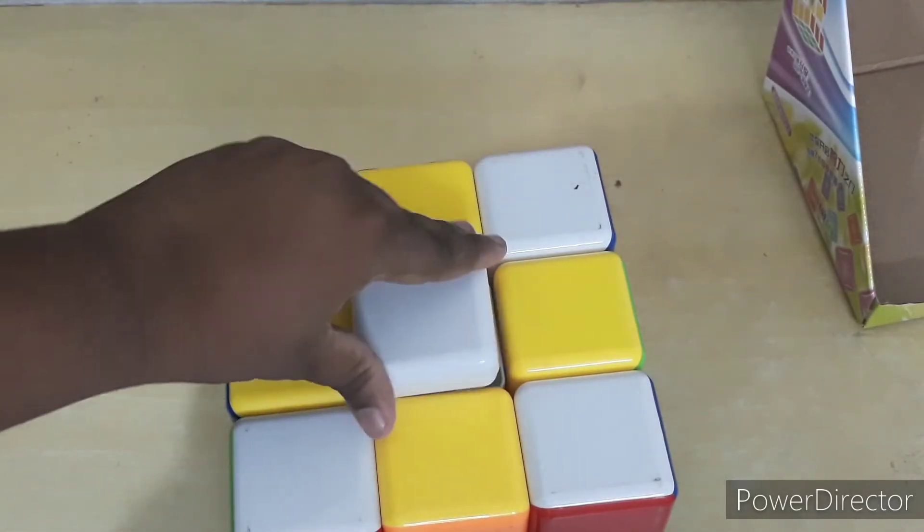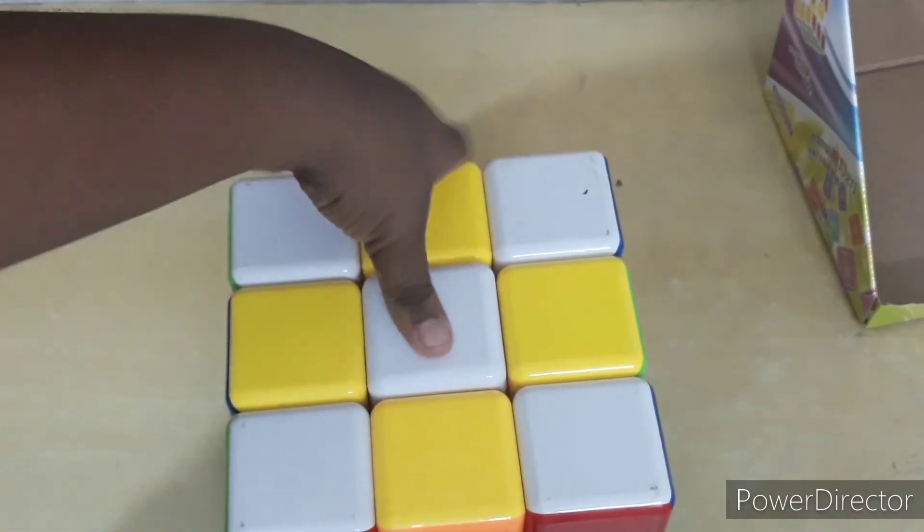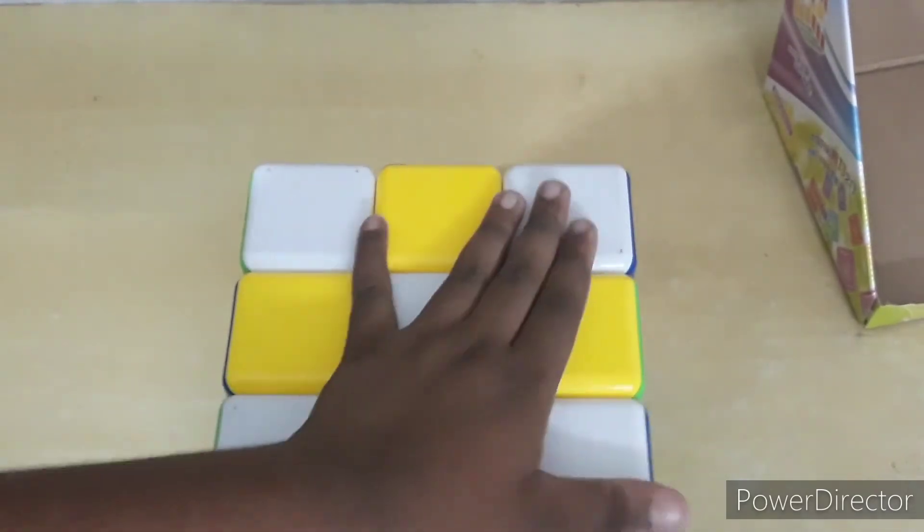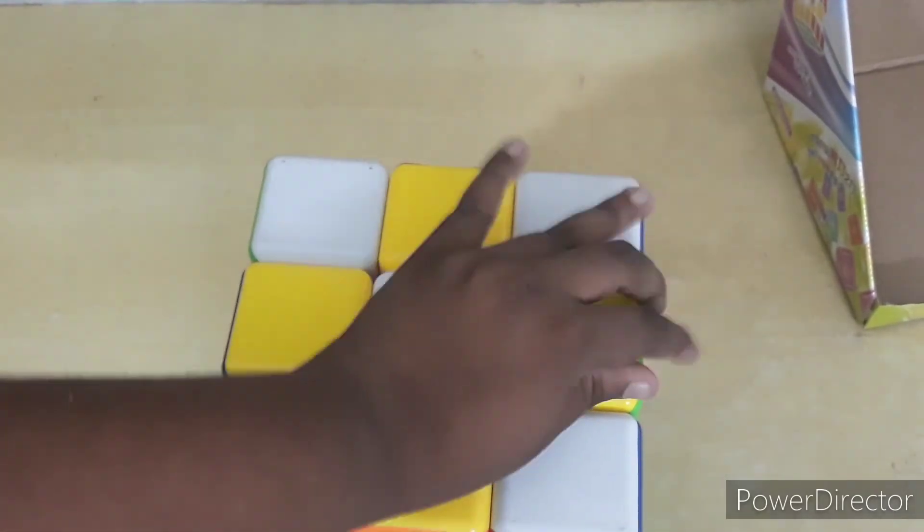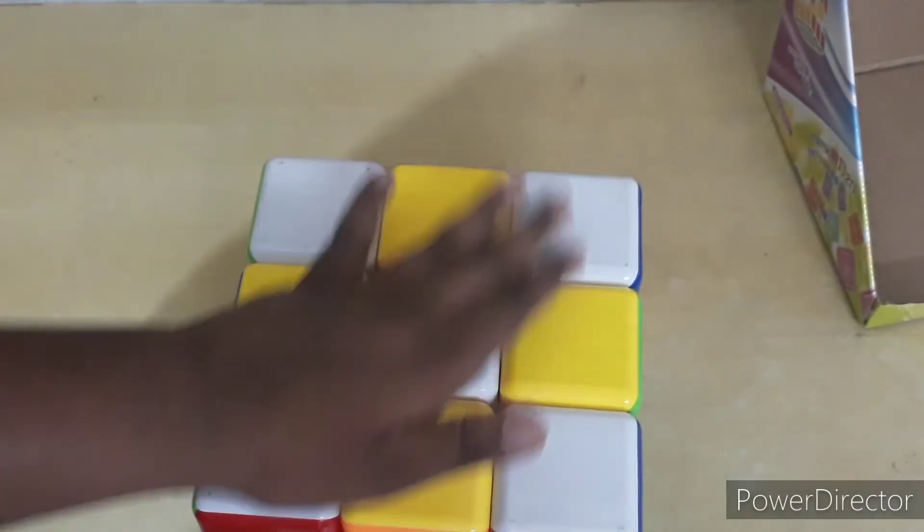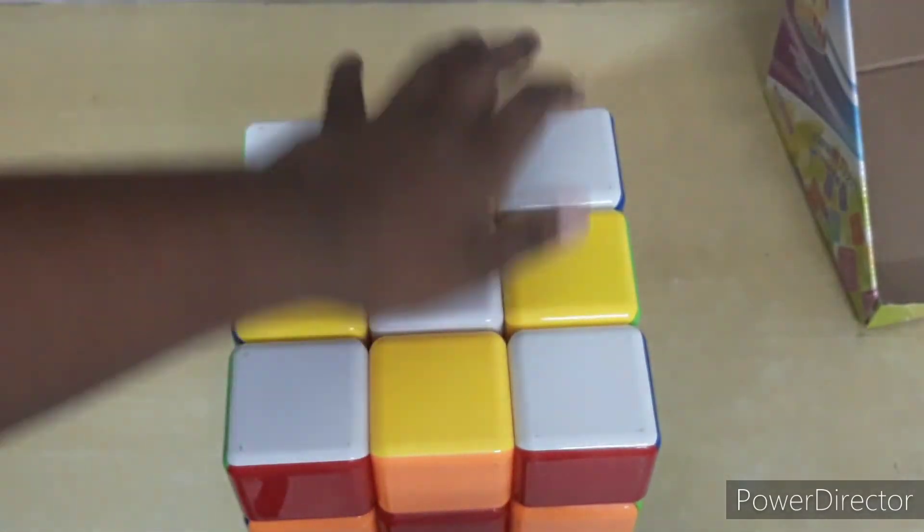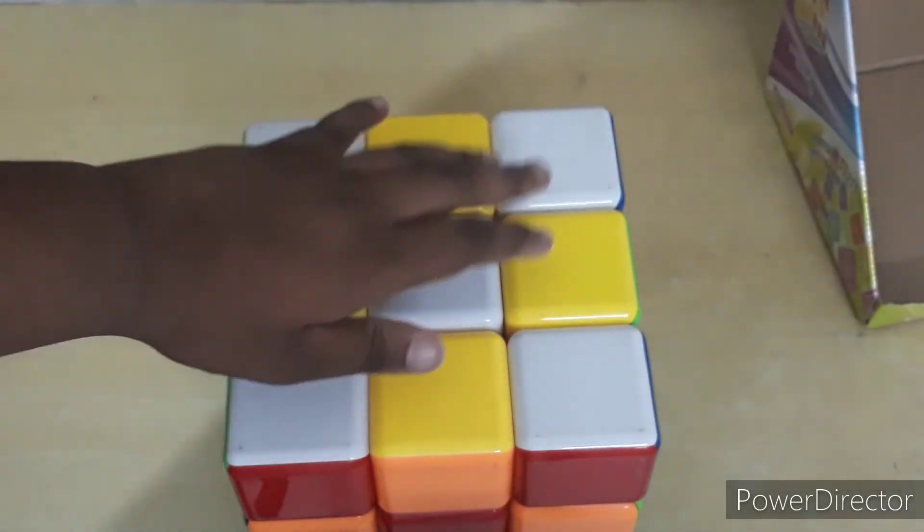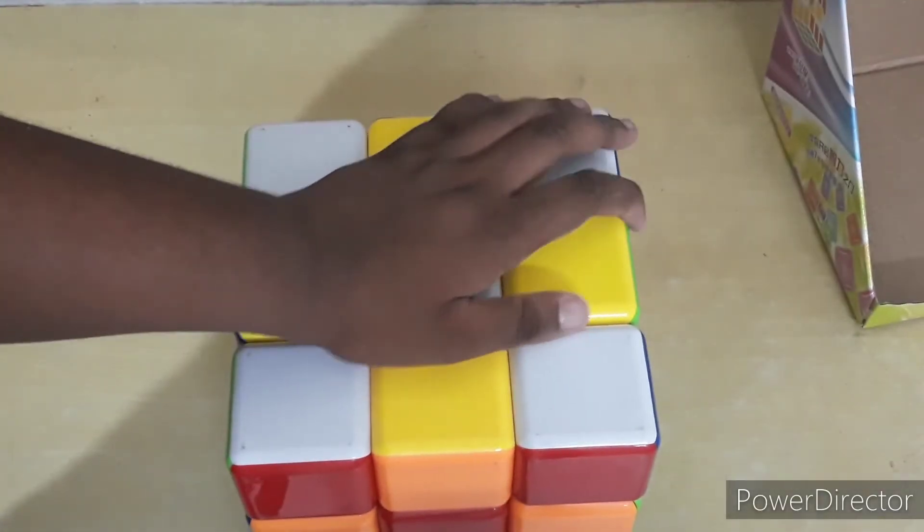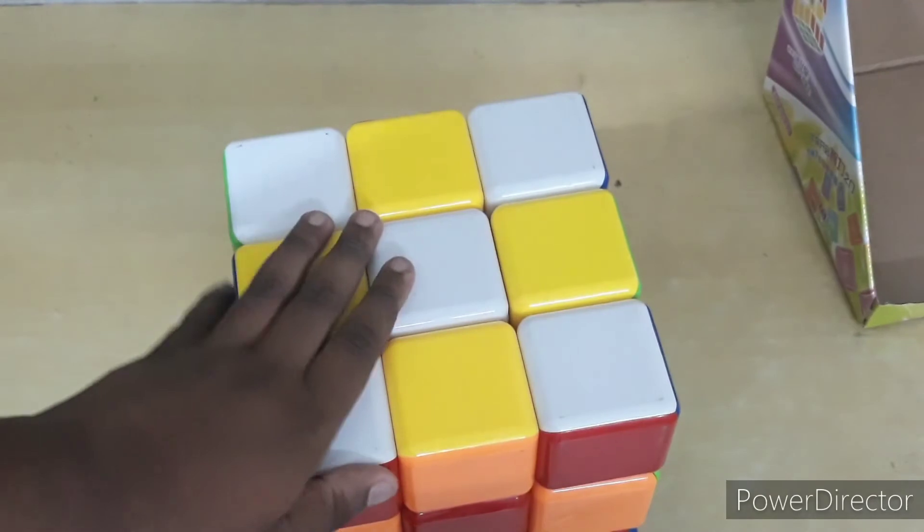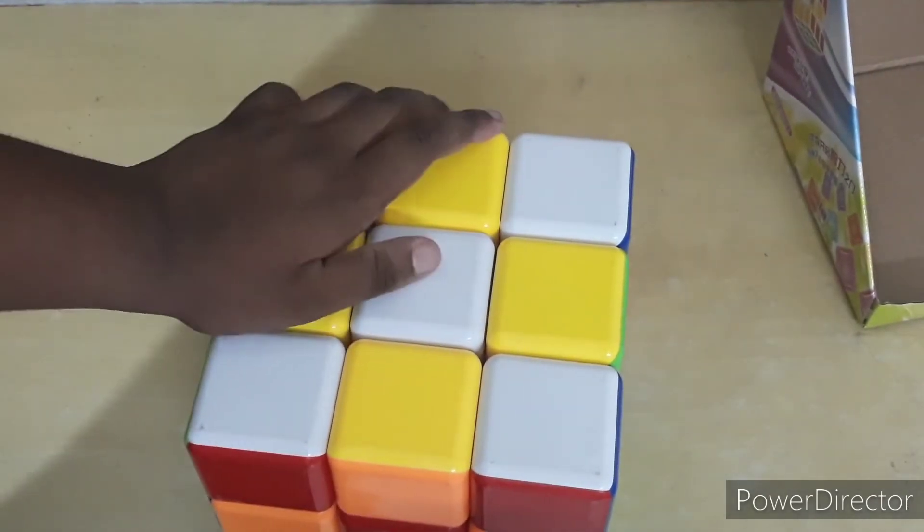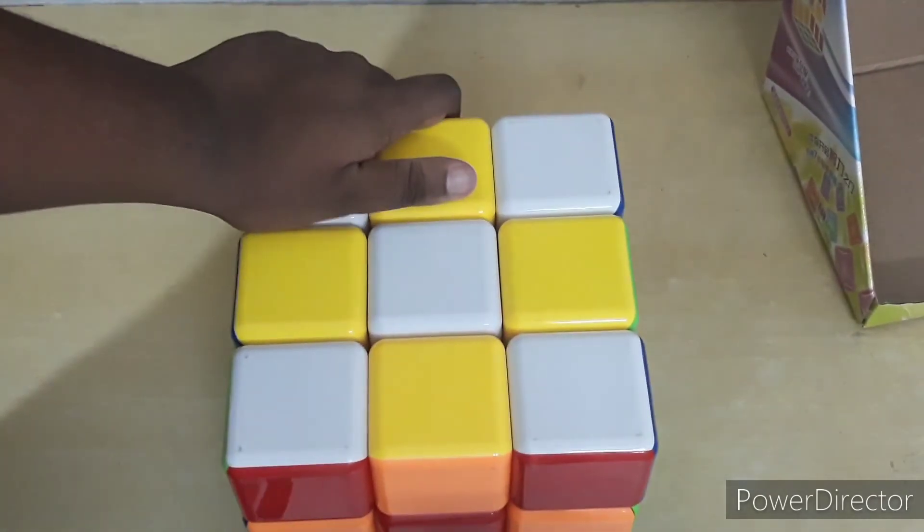If you go back on my channel, there was an unboxing of the Yuxin Little Magic 2x2 and 3x3. This mechanism also belongs to that screw type. In 2021, I don't think this mechanism is so strong. But the cube is good because this is not for all-time playing, this is just for show.